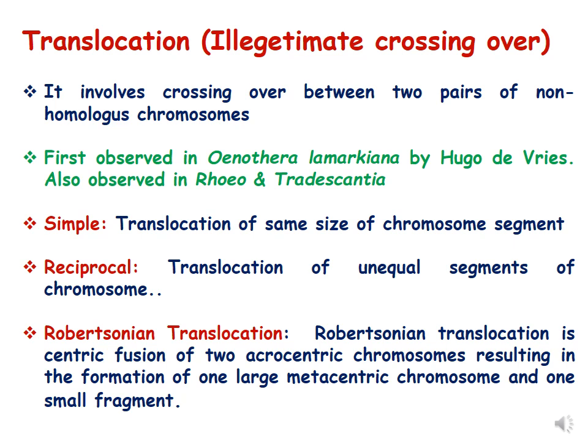So what is translocation? Translocation is also called illegitimate crossing over and it involves crossing over between two pairs of non-homologous chromosomes. It was first observed in Oenothera lamarckiana by Hugo de Vries, and it is also observed in Rhoeo and Tradescantia. Translocation is of three kinds: simple, reciprocal, and Robertsonian translocation.